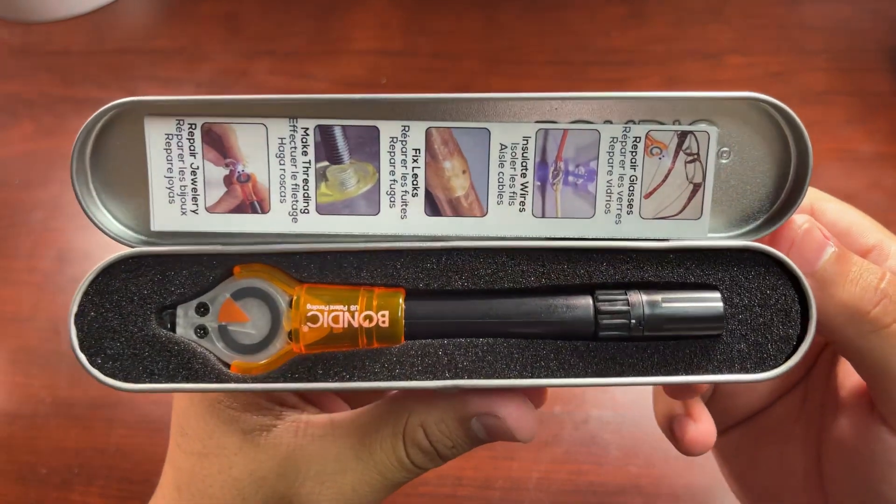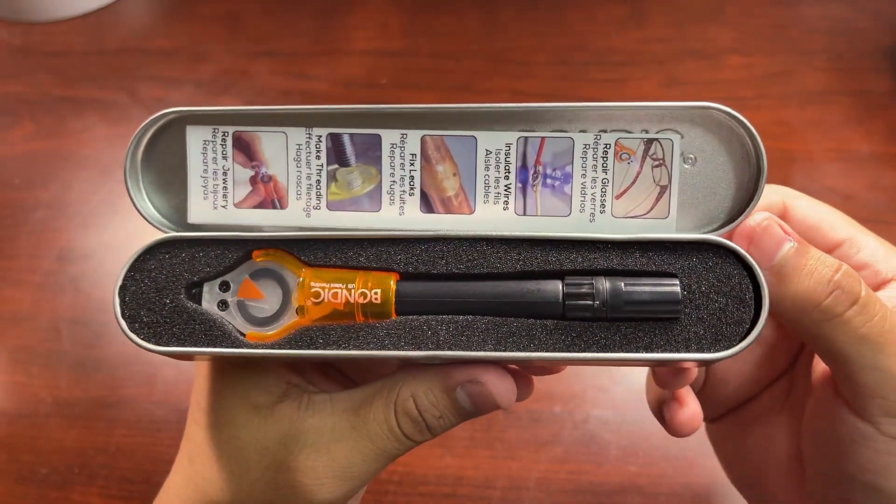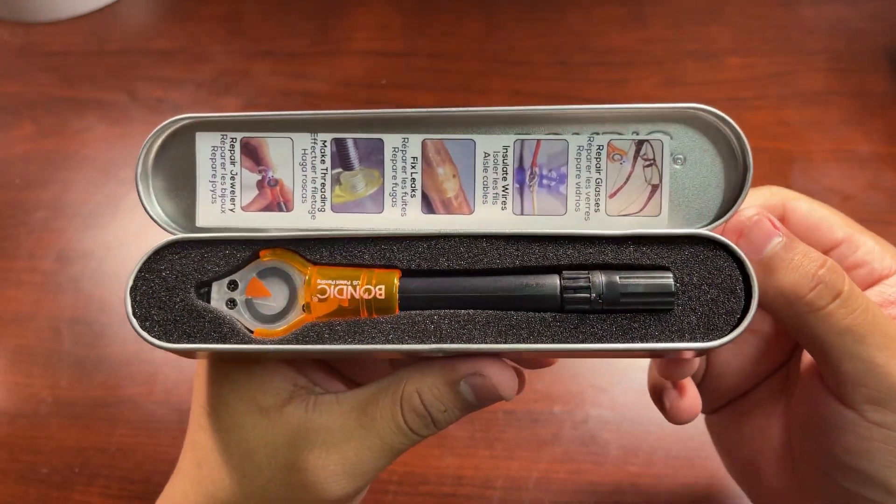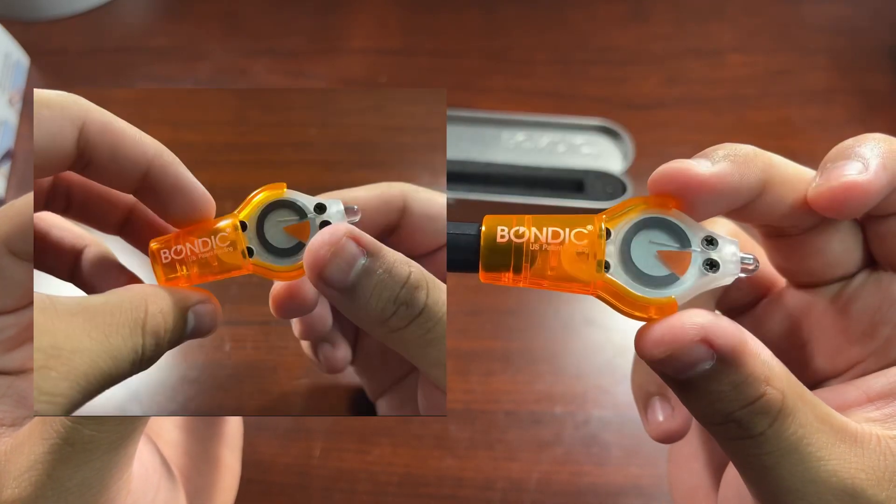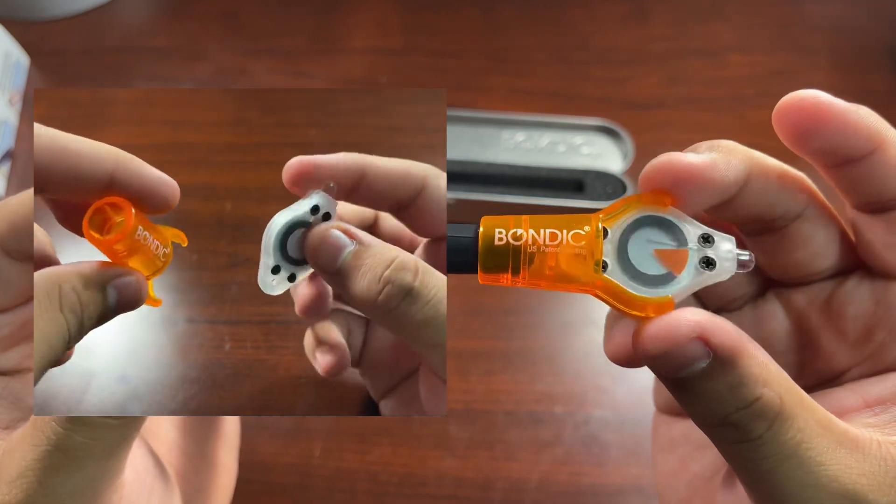It even comes with this instruction manual on how to use it and tells you what things you can do with it. Honestly, it's pretty easy to understand and use. The black tube is what is holding the liquid. It has this little metal tip that helps with accuracy. The orange thing is what is holding the UV light—it can come apart and it's just being clamped out by the orange thing.